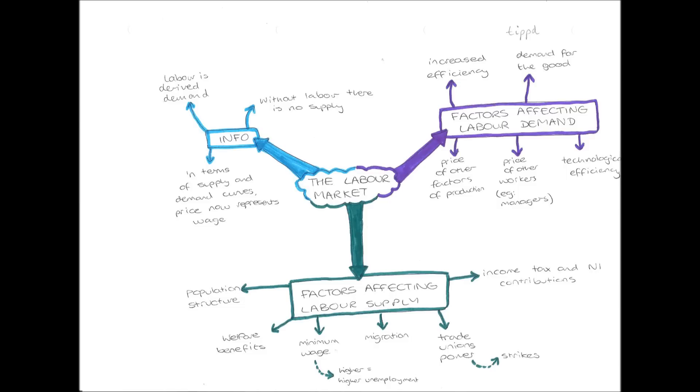Next point, in the top right, we have demand for the good. We already discussed this. If the demand for the good is very low, then the demand for labour to produce it will also be low.